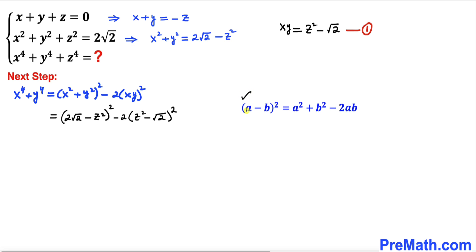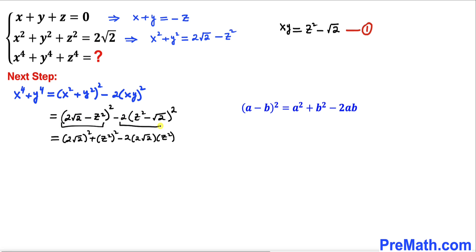Now let's apply the identity a minus b whole square to both parts here. The right hand side becomes: 2 times square root of 2 whole square plus z squared whole square minus 2 times 2 times square root of 2 times z squared, for the first part. Then minus 2 outside, and inside: z squared whole square plus square root of 2 whole square minus 2 times z squared times square root of 2.